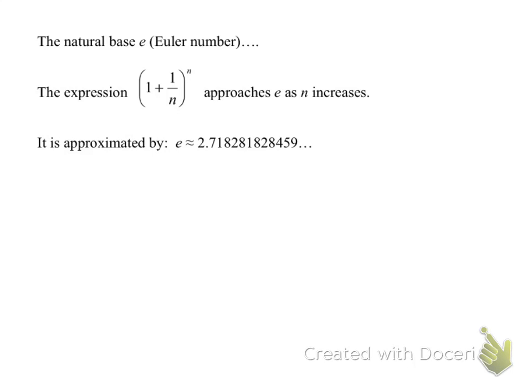Well, the natural base e is called the Euler number, and it can be estimated or approximated by (1 + 1/n)^n. And if you plug increasingly larger values in for n, you'll see that you will approach this decimal, 2.71828, and it appears for the first few decimal places that it does repeat itself, but then it becomes a non-terminating, non-repeating decimal.